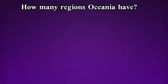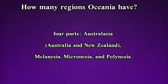How many regions does Oceania have? The United Nations divides the region into four sub-regions: first, Australia and New Zealand; second, Melanesia; third, Micronesia; fourth, Polynesia.